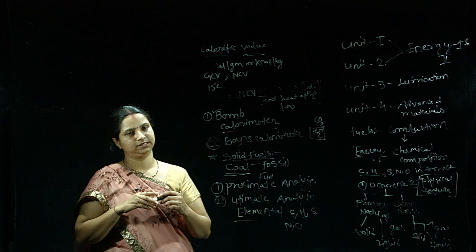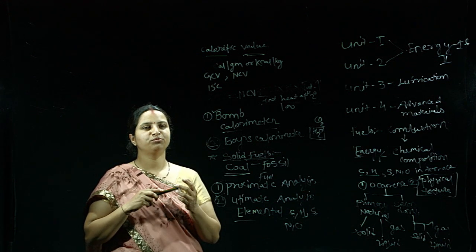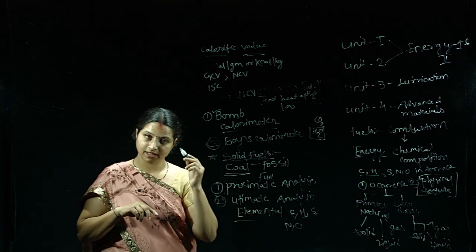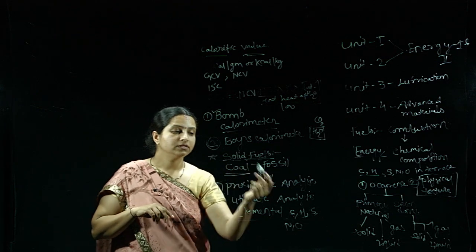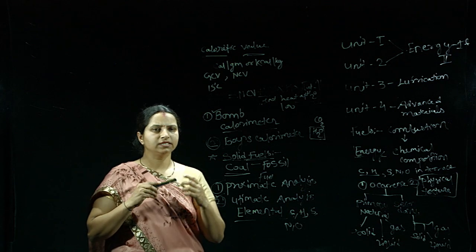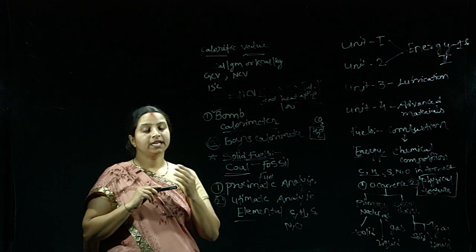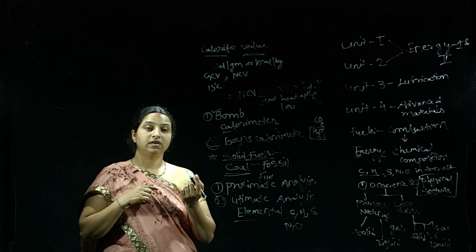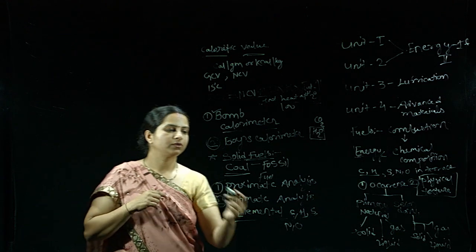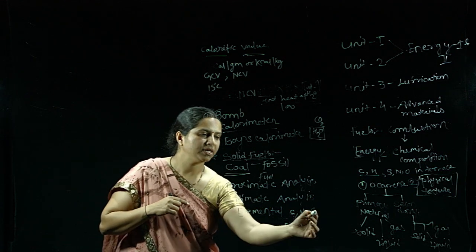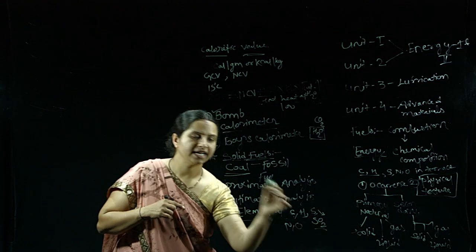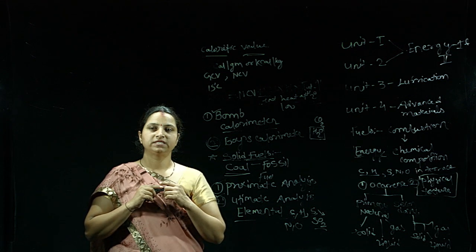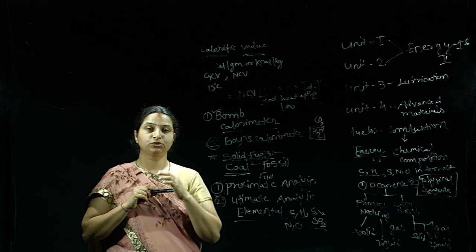Hydrogen should be less, because if hydrogen is more it means the coal has high moisture. So for good quality coal, the percentage of hydrogen should be less. Regarding sulfur — if sulfur is present it will contribute to the calorific value, but when it undergoes combustion it releases SO₂, which is a dangerous pollutant. So we do not want sulfur — sulfur should be less.